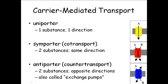Sometimes you have what's called a symporter or co-transporter — you're carrying two things in the same direction. And then sometimes, in fact every cell has some antiporters. They're swapping things, sometimes called exchange pumps — an antiporter or counter-transport. Something comes in and something else goes out.